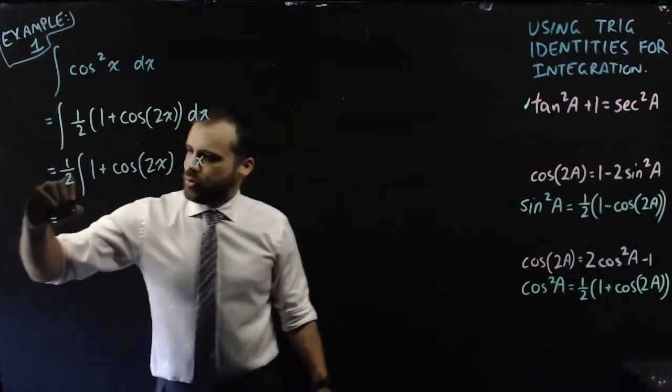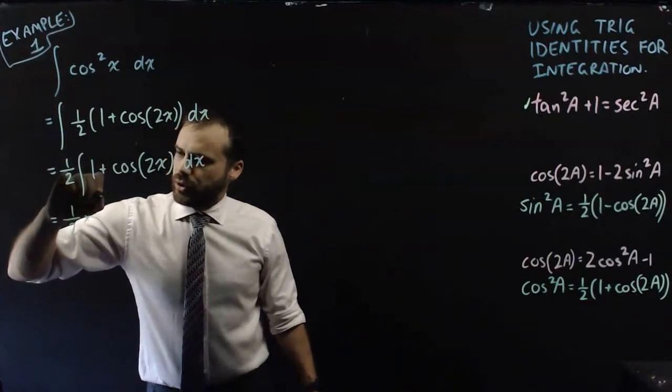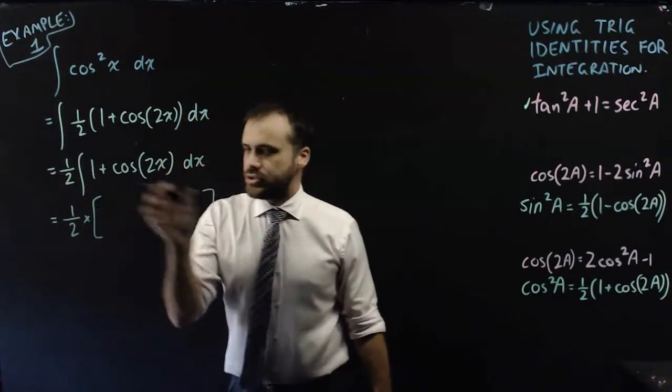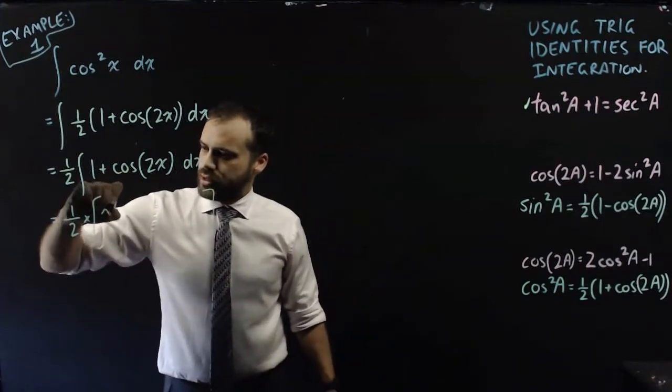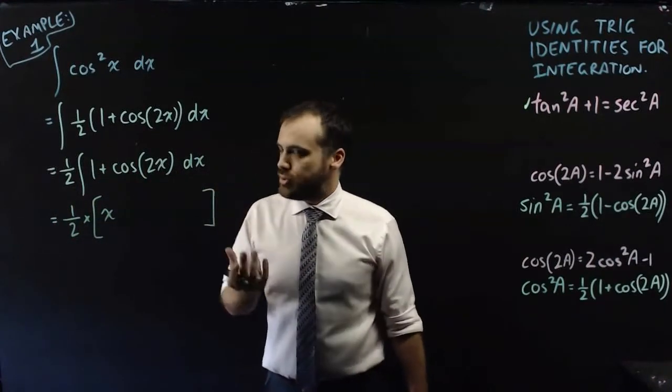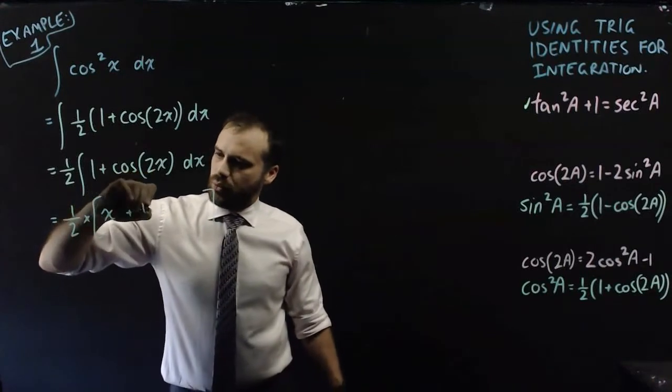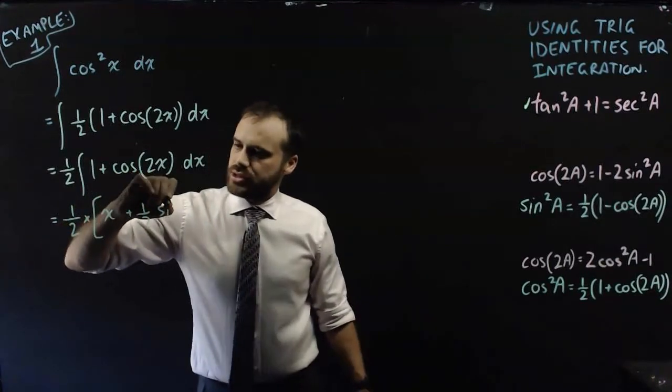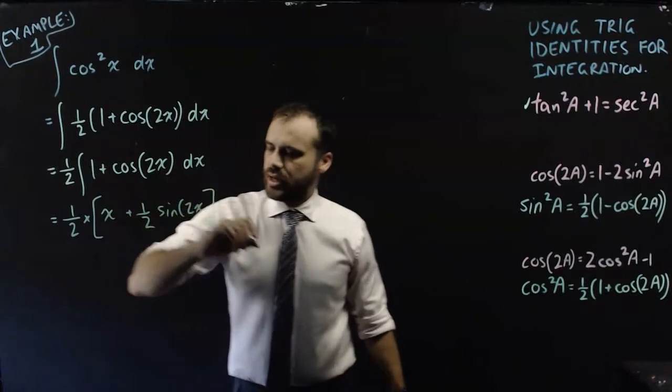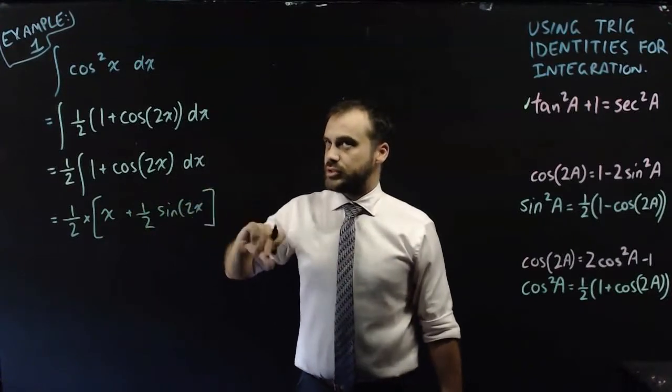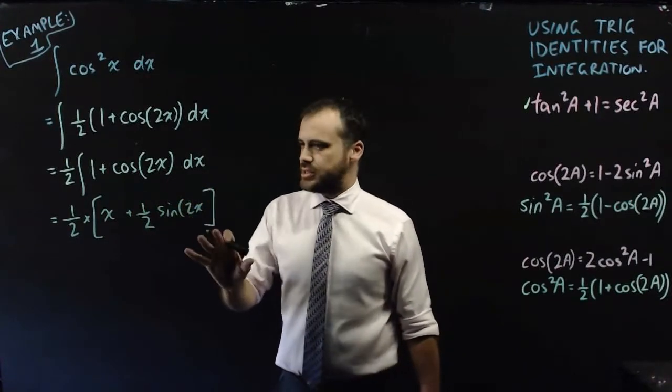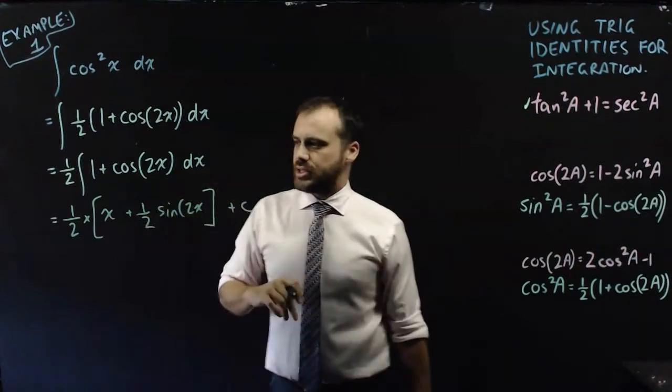That half can come out the front of our integration and then we're just left integrating that. So now we can just finish it off. We have one half multiplied by whatever the integral is. The integral of one is x and the integral of cos(2x) is one half sine(2x), and the derivative of sine is cos. So positive, that's the answer, and then there's a plus C on the end.